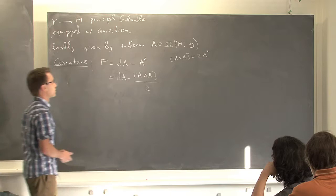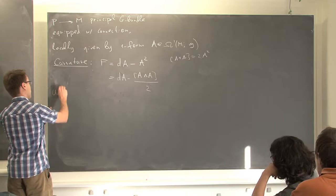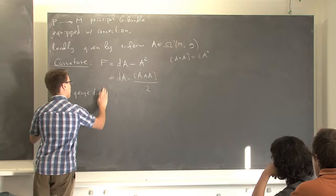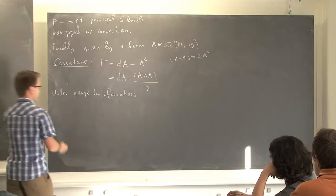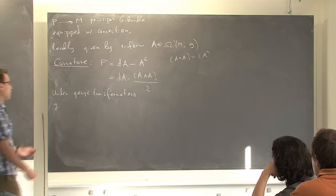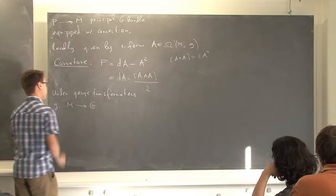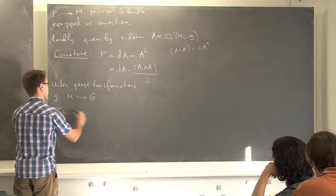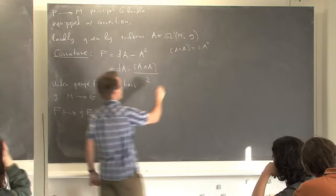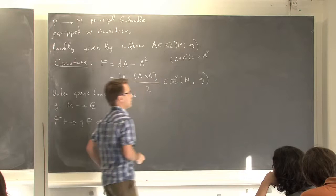Under gauge transformations, the gauge transformations are, in this trivialization, given by a map from the manifold to the group. Under gauge transformations the curvature changes by just conjugation. So the curvature will be a two-form on the manifold valued in the Lie algebra.